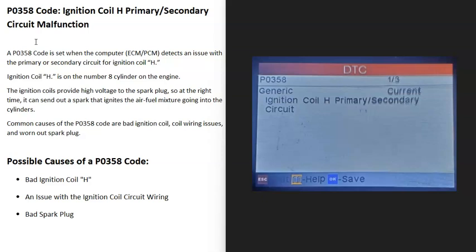Today I'm talking about a P0358 code, what it is, and how you go about fixing it. A P0358 code is an ignition coil H primary secondary circuit malfunction.